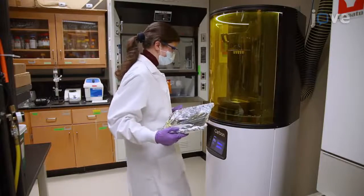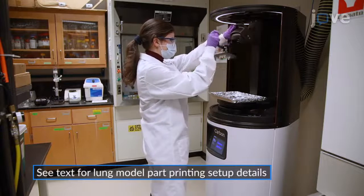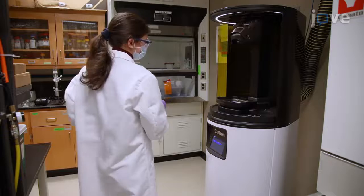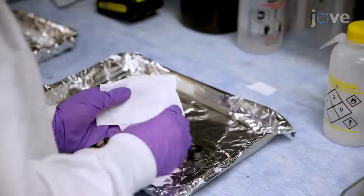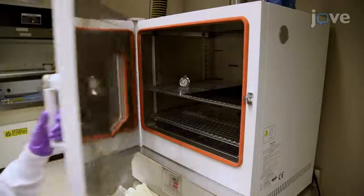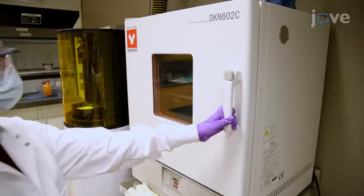After printing the experimental components and completing post-processing as per the manufacturer's instructions, carefully wash the parts printed in soft resin with at least 99% purity isopropyl alcohol to remove any excess uncured resin before thermal curing the parts in a convection oven for 8 hours according to the manufacturer's specifications.